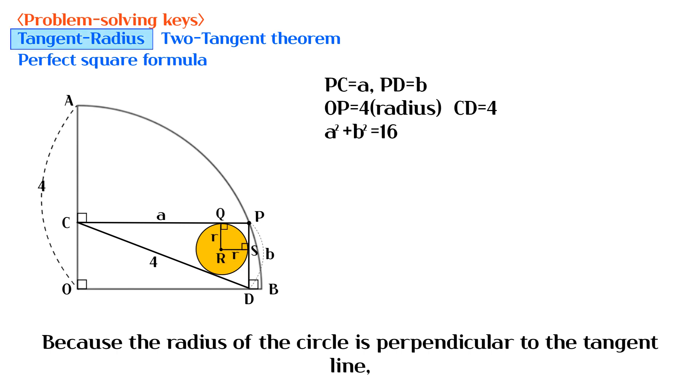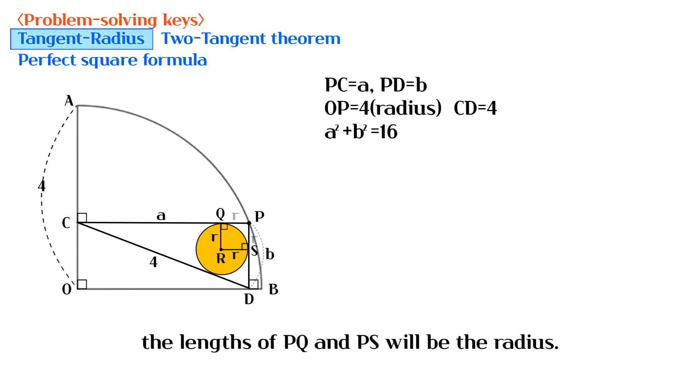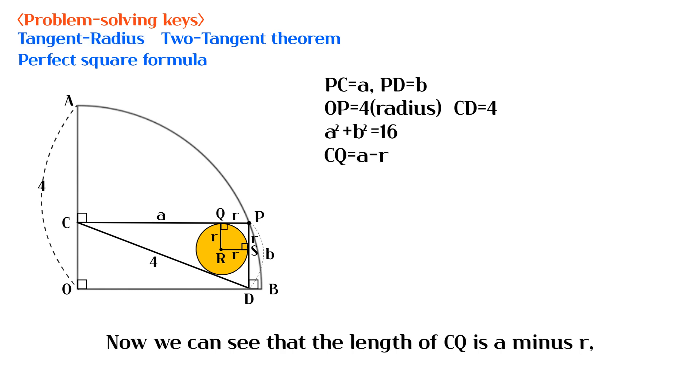Because the radius of the circle is perpendicular to the tangent line, the lengths of PQ and PS will be the radius. Now we can see that the length of CQ is A minus R, and the length of SD is B minus R.